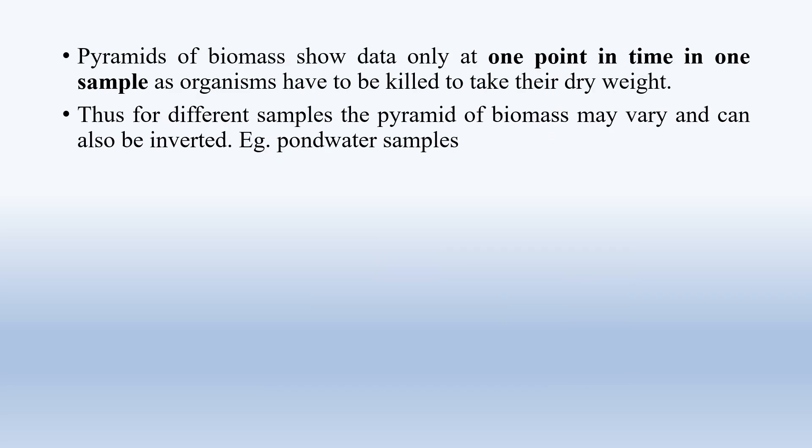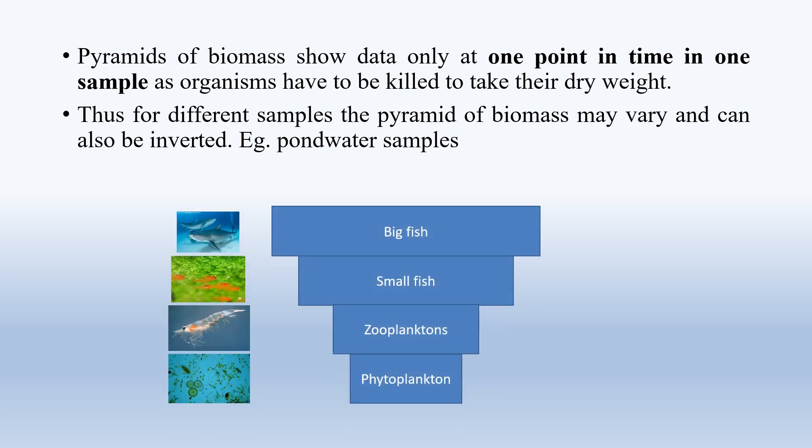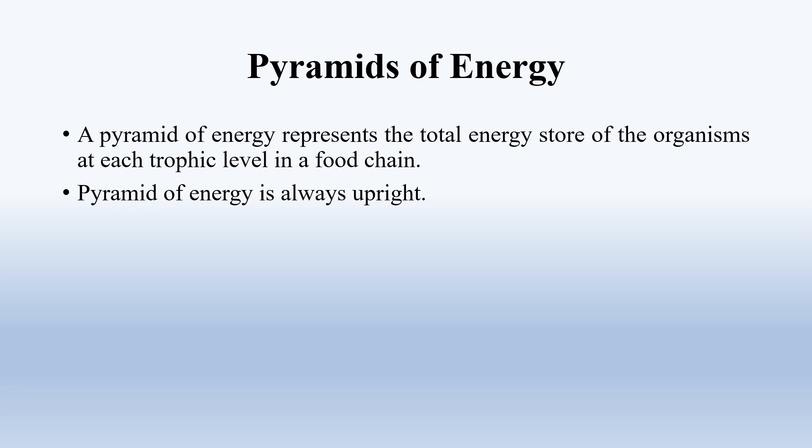One prerequisite of the pyramid of biomass is that data must be taken at one point in time in one sample, because organisms have to be killed for their dry weights to be measured — typically by drying them in an oven. For example, in a pond water sample, the dry weight of phytoplanktons would be much less than that of zooplanktons, and the biomass of small fishes feeding on zooplanktons would be more, and the biomass of big fish even greater — so the pyramid of biomass can be inverted in such a case.